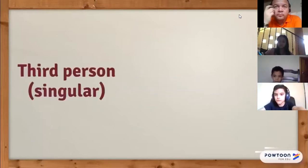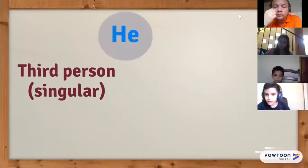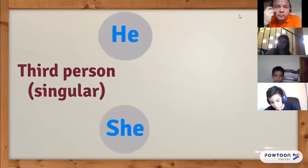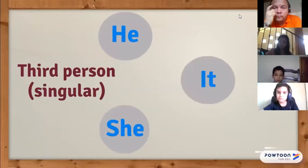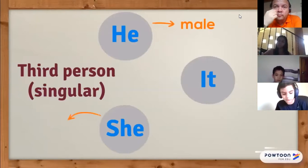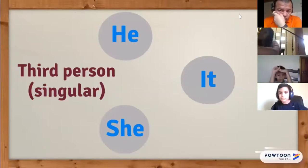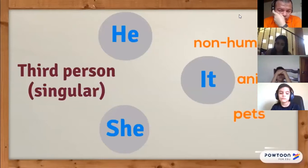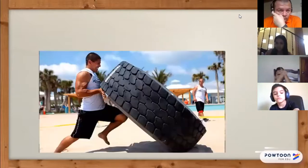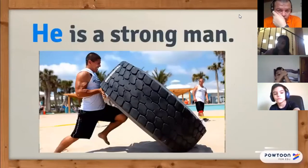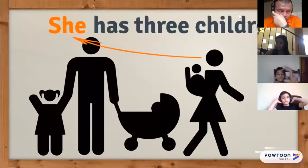For the third person singular, the subject pronouns are 'he,' 'she,' and 'it.' We use 'he' for male, 'she' for female, and 'it' for non-humans and animals, including pets. For example: 'He is a strong man.' 'She has three children.'